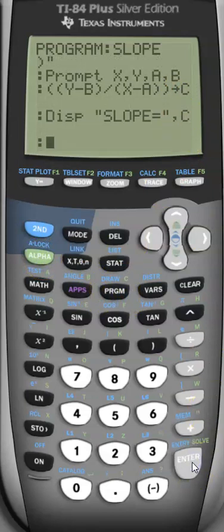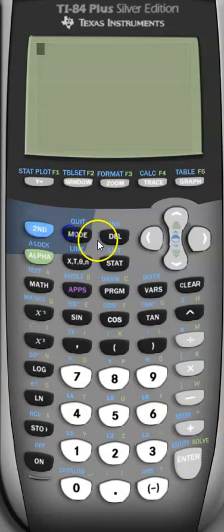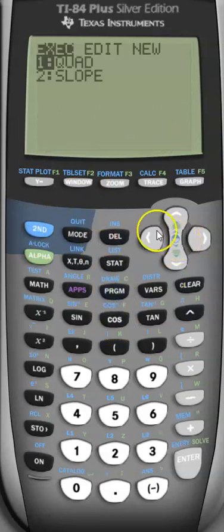Now the one thing I want to make sure that we realize is that a slope typically is in fraction form. So I'm going to show you what it looks like in this form. So we're going to go ahead and exit out of here. I'm just going to hit program again. You see slope is there. So I'm going to go scroll down to slope.